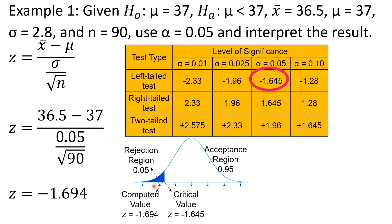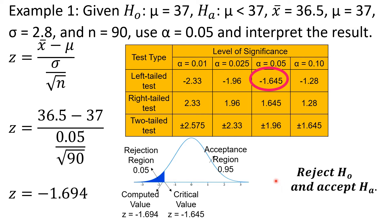We can clearly see from the figure that the computed Z value is within the rejection region. Therefore, we reject the null hypothesis and accept the alternative hypothesis, since the computed Z value is in the rejection region. The absolute value of the computed Z, 1.694, is greater than the absolute value of the critical Z value, 1.645, which confirms we must reject the null hypothesis and accept the alternative hypothesis.